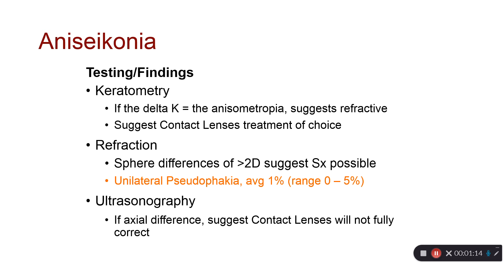You can also use partial coherence interferometry to look at the axial length of each eye. If one eye is longer than the other, we would consider it an axial length anisometropia. Typically, in reality, most types of anisometropia are a mix of both, with a little contribution from both axial and refractive features.